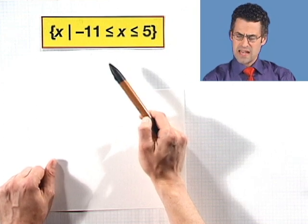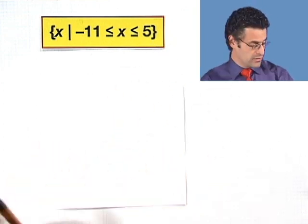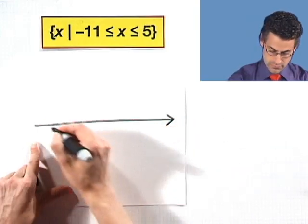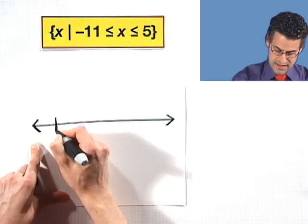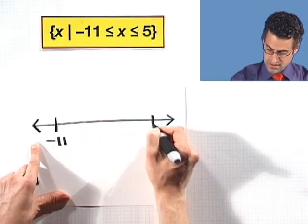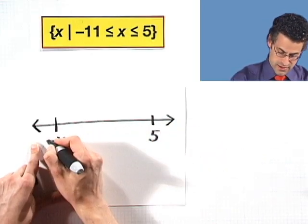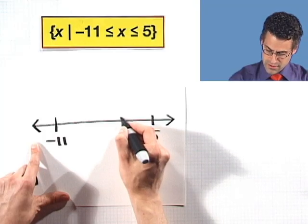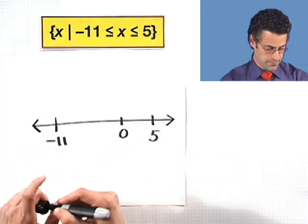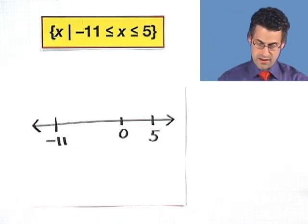Now what is that set? Well that actually describes an interval. We can draw the interval if you want to see it on a number line. So let's mark negative 11 as being here. Here, let's say, so here is 5, 0 is probably around here. And so what are we talking about?